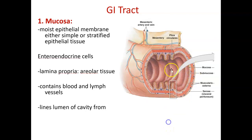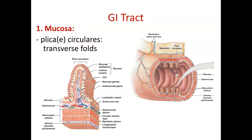The mucosa has epithelial tissue — epithelial covers and lines everything. There are special cells called enteroendocrine cells that secrete hormones. The lamina is the connective tissue underneath with blood supply and some lymph. This lining runs from your mouth to your anus. The mucosa also has folds called plica, which force food to spiral through and help it mix with different secretions.